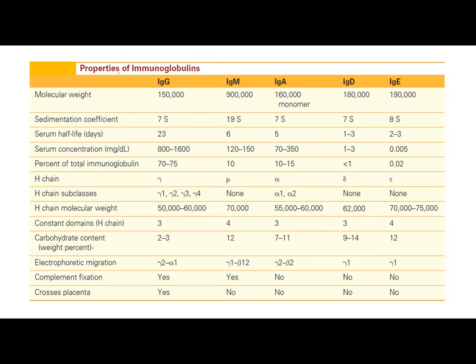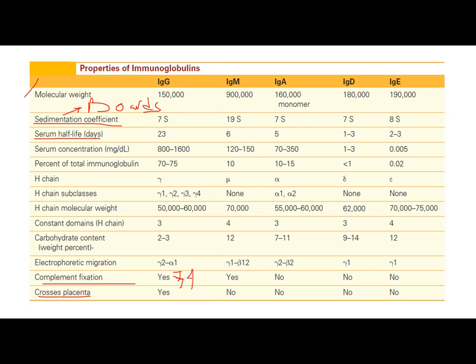This is the summary table of immunoglobulin classes. Memorize the molecular weight, sedimentation coefficient, half-life, and concentration values — these appear on the boards. The most abundant is IgG. Regarding complement fixation: IgG and IgM can fix complement; IgG4 cannot. All immunoglobulins cannot cross the placenta except IgG.